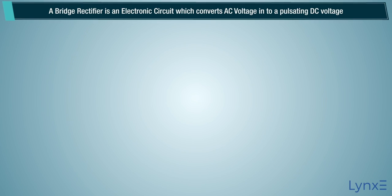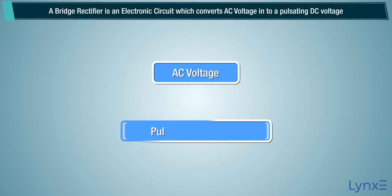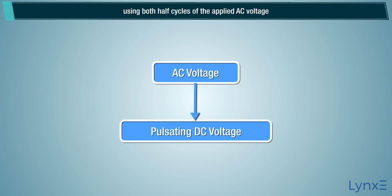Bridge Rectifier. A bridge rectifier is an electronic circuit which converts AC voltage into a pulsating DC voltage using both half cycles of the applied AC voltage.